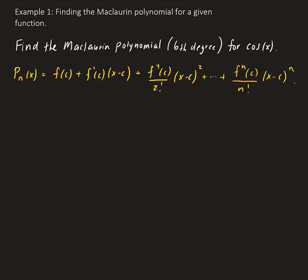In this example, we want to find the Maclaurin polynomial — specifically a six-degree polynomial for cosine x. A Maclaurin polynomial is basically a Taylor polynomial expanded about x equals zero.